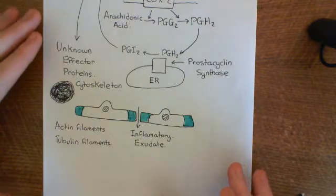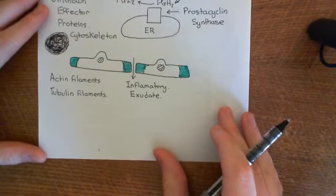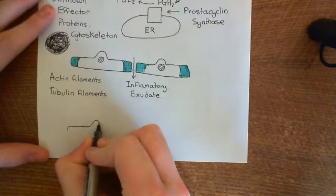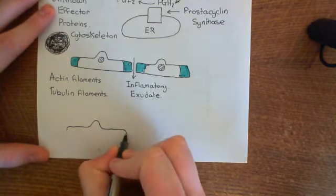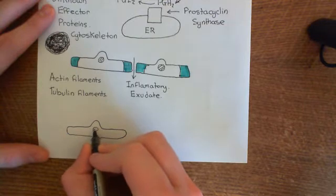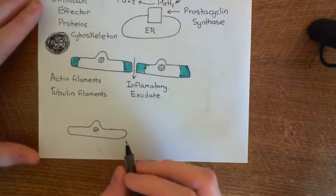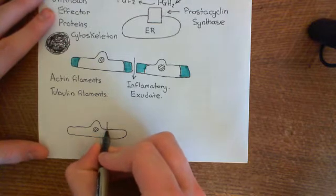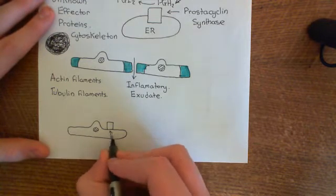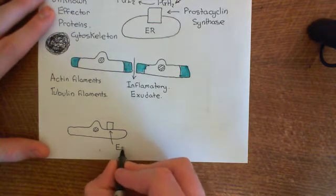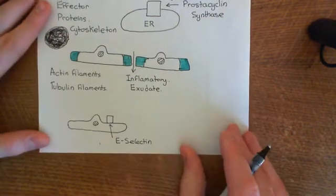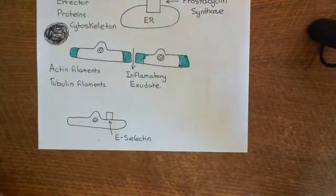We'll start with neutrophil extravasation, because this occurs first. These endothelial cells which have undergone type 2 activation are going to start producing two new important proteins. One is known as E-selectin. This new protein on the surface of the cell is E-selectin, and it's a cell adhesion molecule within the selectin family of cell adhesion molecules.